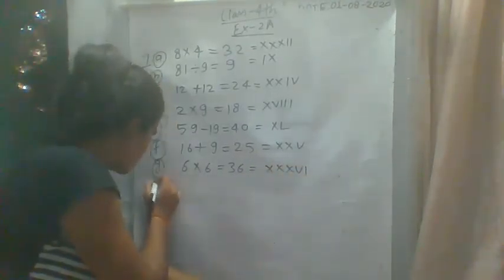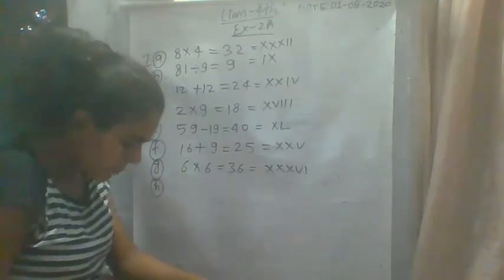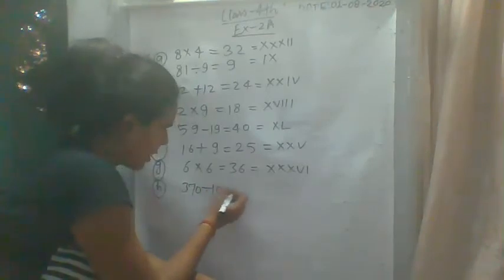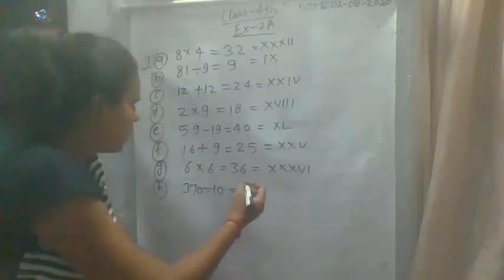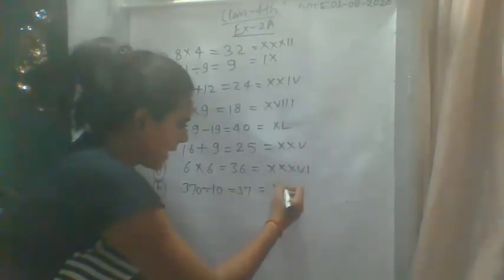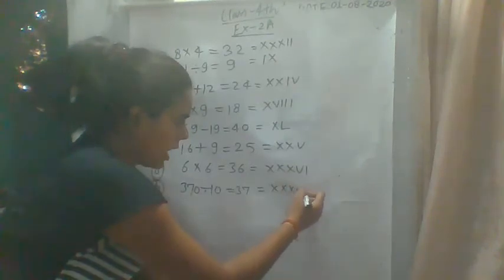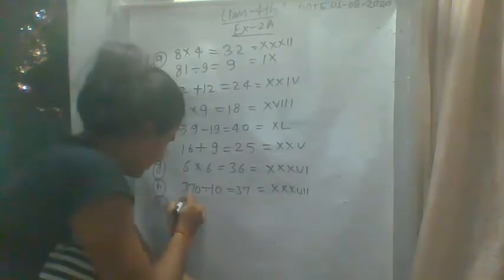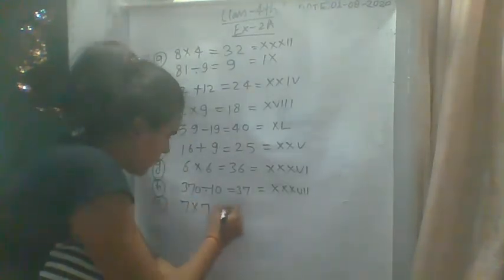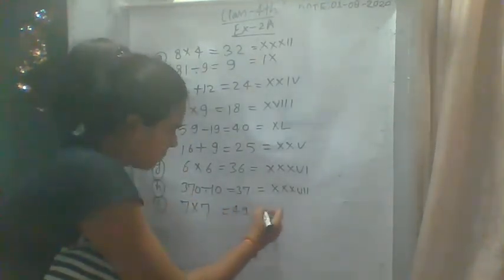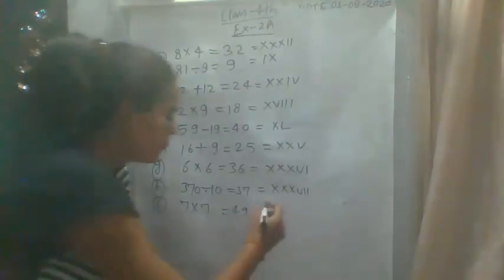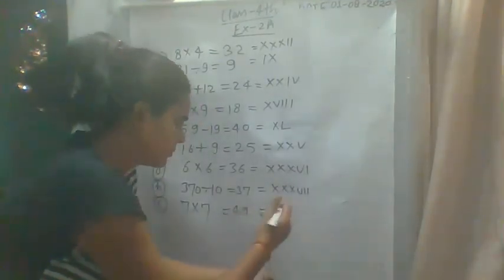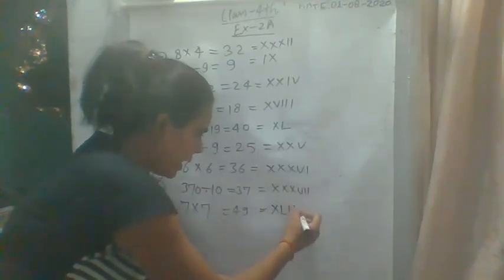Then H: 370 divided by 10. How much is your answer? 37. So the answer is XXXVII. Then I, the last number: 7 multiplied by 7. 7 times 7 is 49. The answer is XLIX.